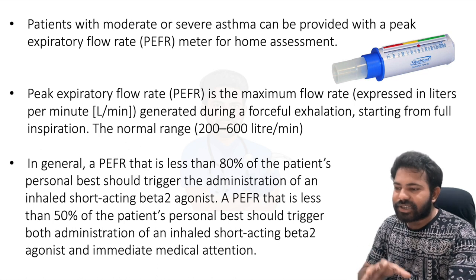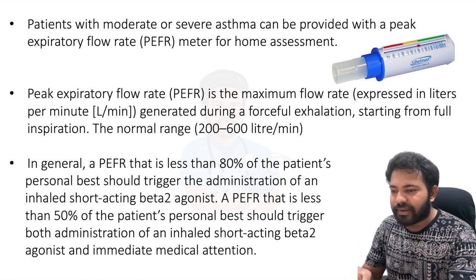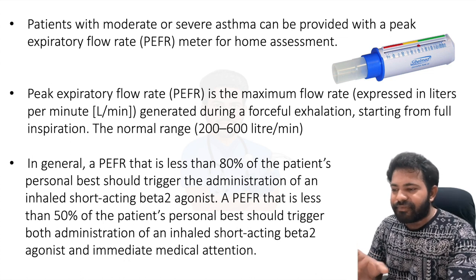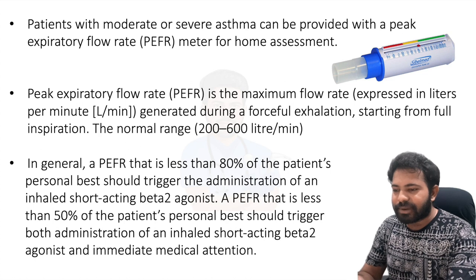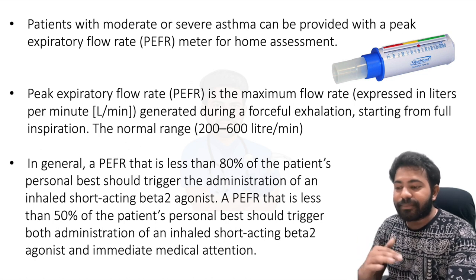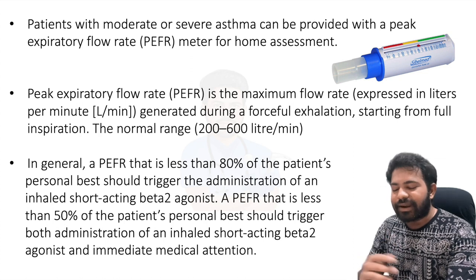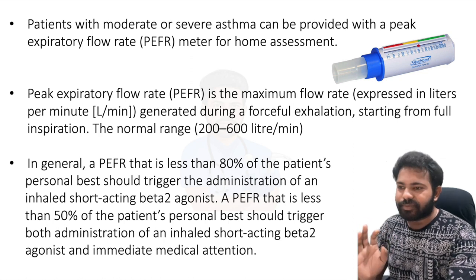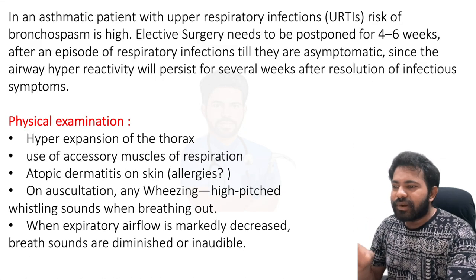A PEFR less than 80 percent of the patient's personal best should trigger administration of an inhaled short-acting beta-2 agonist. A PEFR less than 50 percent of the patient's personal best should trigger both administration of an inhaled short-acting beta-2 agonist and immediate medical attention — the person has to go to the hospital.